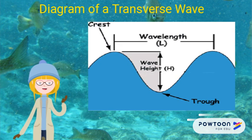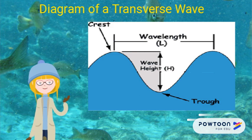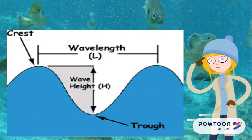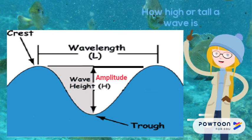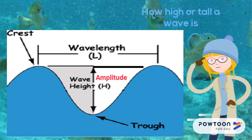Here is a diagram of a transverse wave for your notes. Amplitude means wave height — it's the same thing as the height of a wave. You can add that to your diagram.